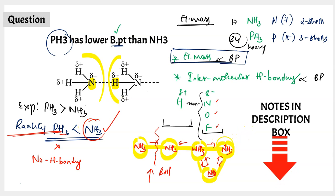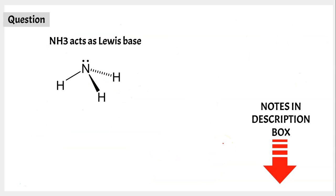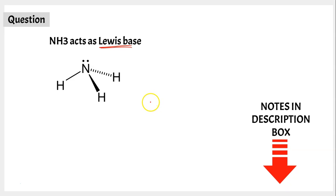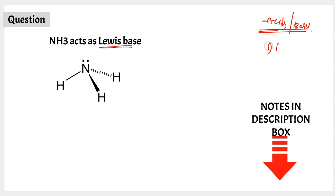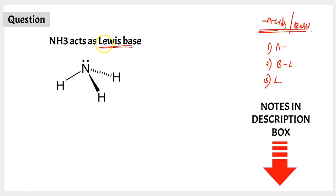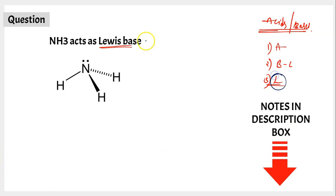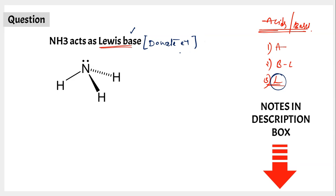Recap: when comparing melting and boiling points, first check the molecular mass relationship. If that is valid, the problem is solved. If not — as in this question where reality and expectation contradict — look for intermolecular hydrogen bonding. Moving to question three: NH3 acts as a Lewis base. The concept of acids and bases is explained by several theories — Arrhenius, Bronsted-Lowry, and Lewis theory. According to Lewis theory, a base is a substance that can donate a pair of electrons.